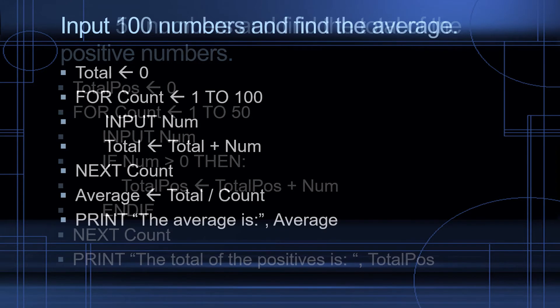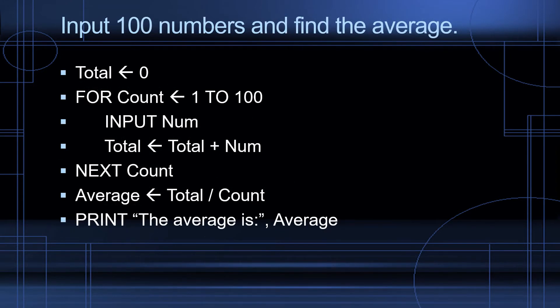Another algorithm that we see often in IGCSE Cambridge Computer Science is input 100 numbers and find the average. Now, how do you find the average in your head if I asked you to find the average of 100 numbers? Well, I would take all the numbers and add them together, total them together, and divide by the number of numbers that I have. So that's exactly what we're going to do.